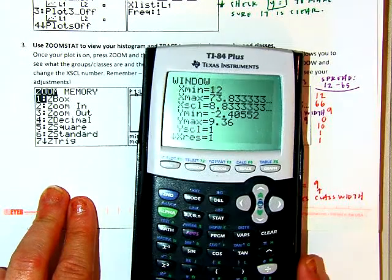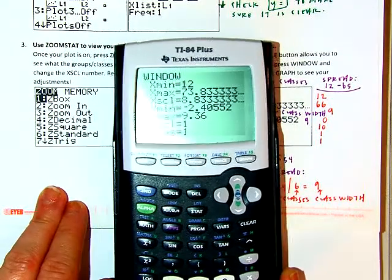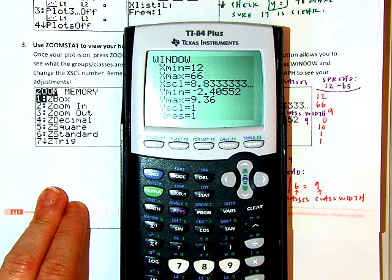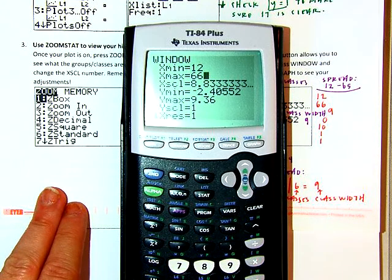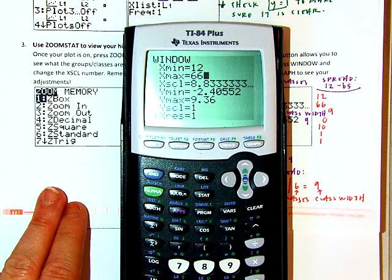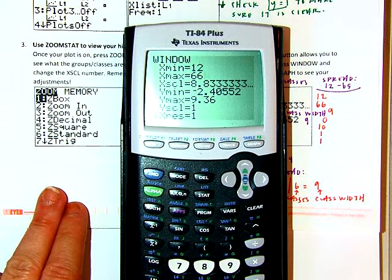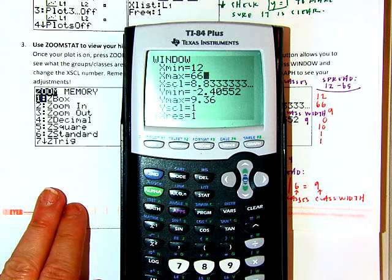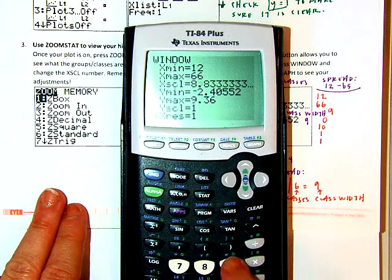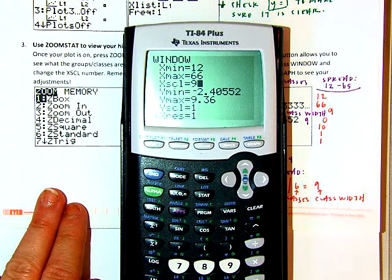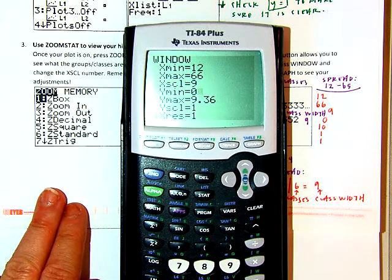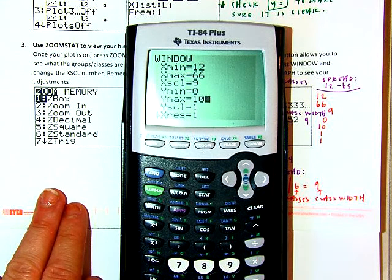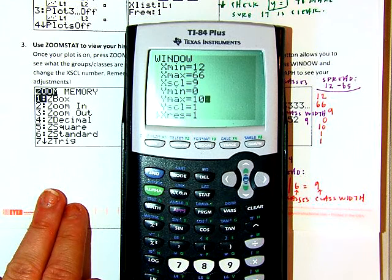Window. All right, so I'm at my window. Let me get it so you can see it right there. So my x min is at 12. I'm going to make it go to 66 instead. So I'm using my adjusted spread. I'm picking something where the difference between them is divisible by the amount of classes that I wanted. I wanted six classes. So the difference between those numbers is 54. When I divide 54 by 6, I get 9. X scale is your class width. It should be 9. Your y min should be 0. No need to be in the negative. So here's my 0. My y max, I would start it at 10. Like I said, I might adjust that in a little bit. But my y scale, my x res, both stay at 1.